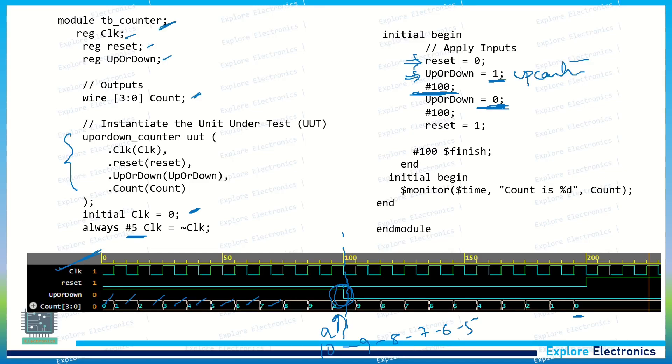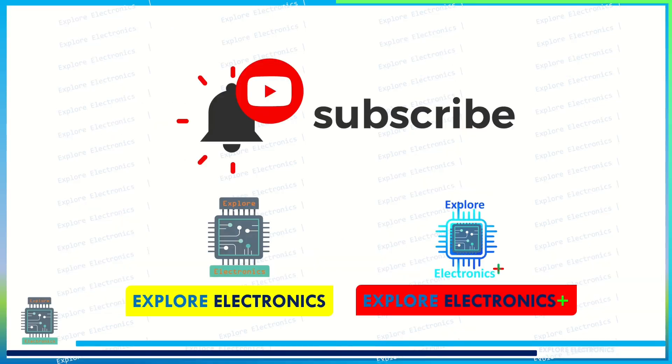You can see here after 100 time units I am making reset equal to 1 to check whether my counter will reset correctly. So when reset becomes 1, here you can see the counter output will be 0. It means when reset is equal to 1, counter will reset. When the reset is equal to 0, counter will count depending on the up or down value. This is an up and down counter using Verilog. Thank you.